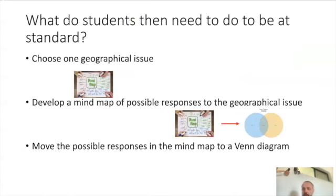Now that we've broken down that achievement standard, what do kids fundamentally need to do? They need to choose one geographical issue — not multiple, just one. They need to develop a mind map of possible responses to that geographical issue, then move those responses into a Venn diagram highlighting the similarities and differences. If they can do that, they're at standard.